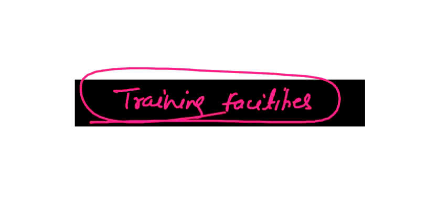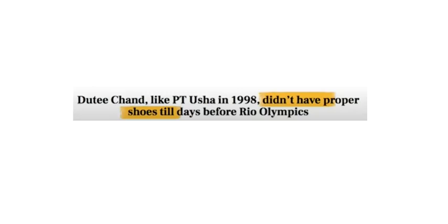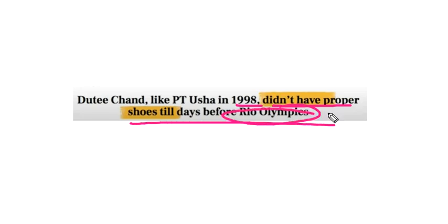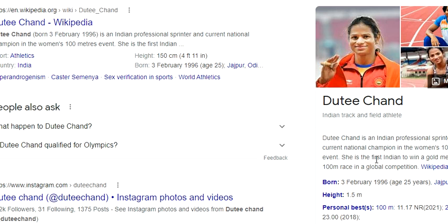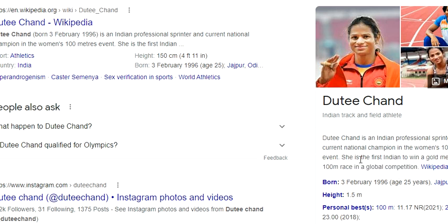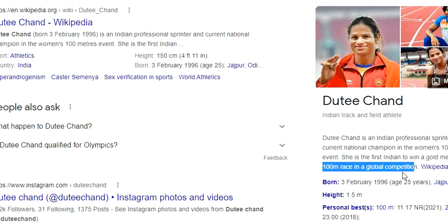There is also a lack of training facilities for athletes. For example, Duthi Chand, like PT Usha, did not have proper shoes until days before the Rio Olympics. She was the first Indian to win a gold medal in the 100-meter race at a global championship competition.